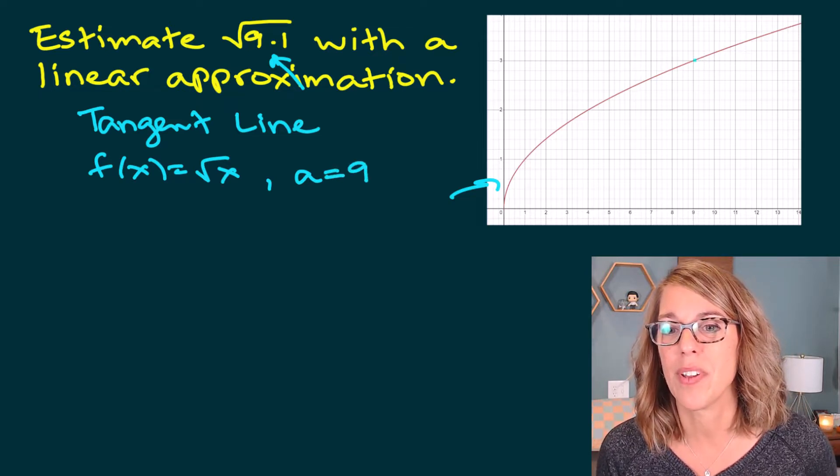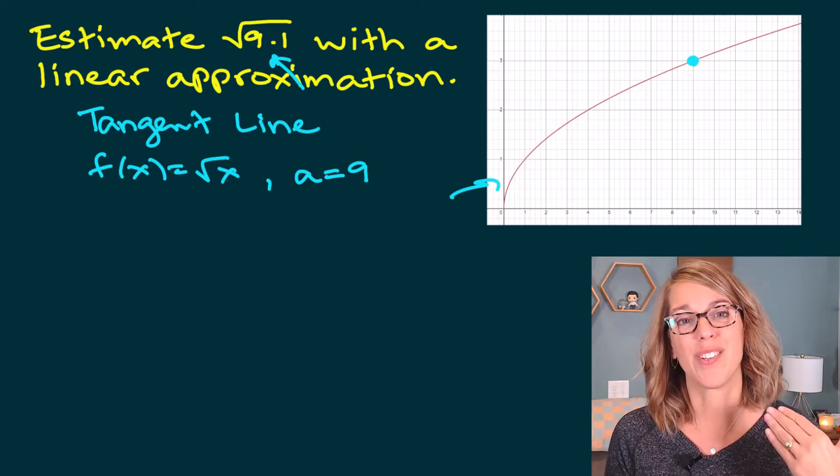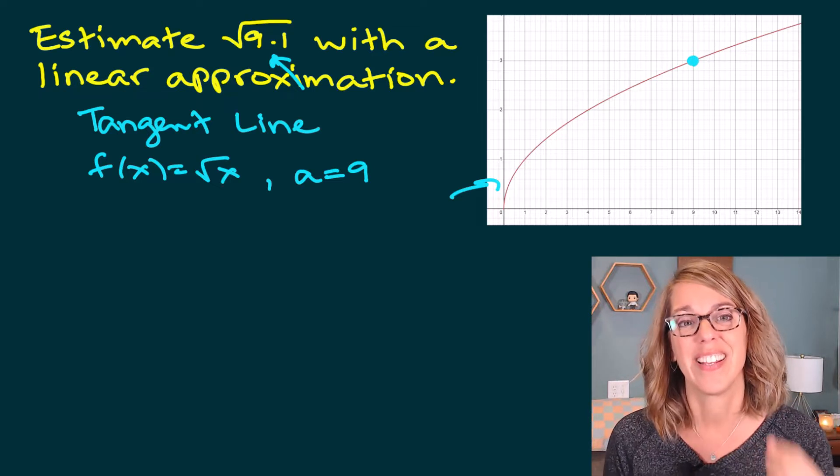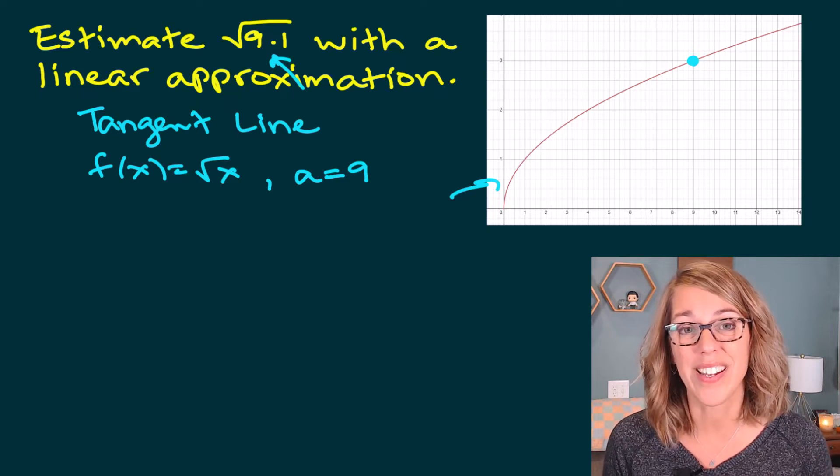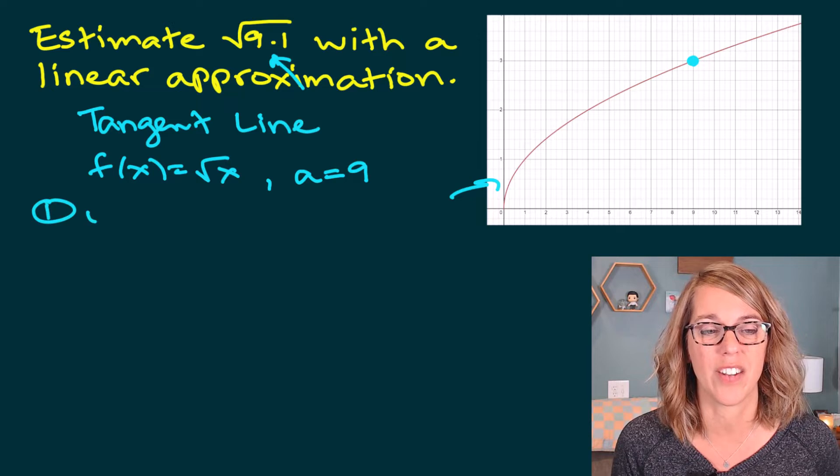So what I'm doing is coming up with the equation of the tangent line here at 9, and I'm going to use that equation to estimate 9.1's square root. Okay, so first step is to find the equation of that tangent line.